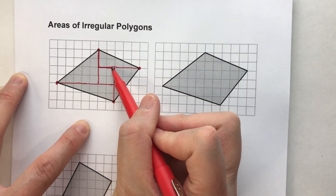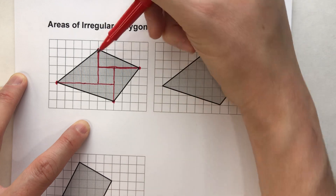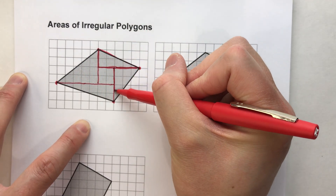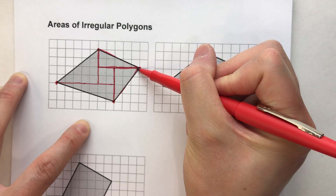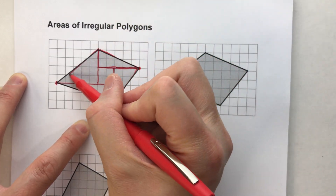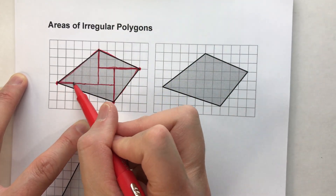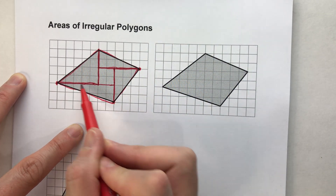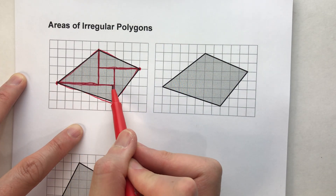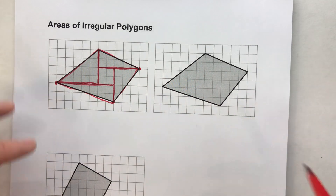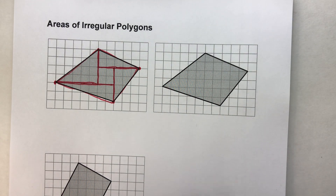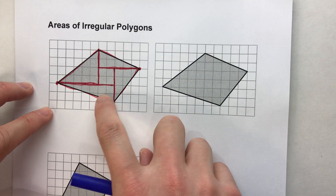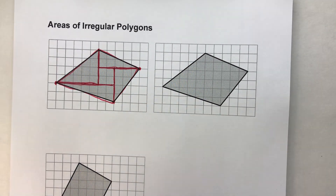And notice what we have — we end up forming four right triangles: there's one, there's another one, here's one right here, and then here's one on the bottom. And there's a square in the middle. We can find the areas of these things because we know how to find the areas of triangles, and we also know how to find the area of a square.